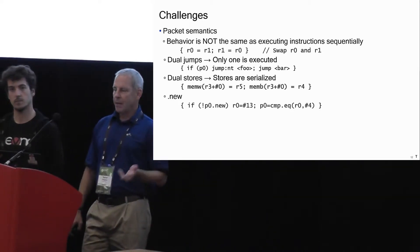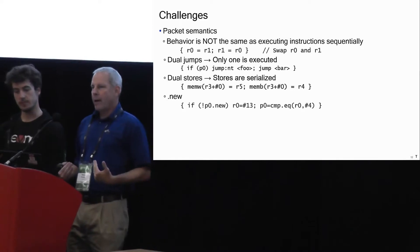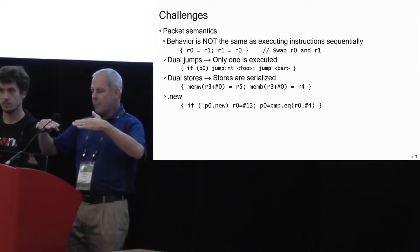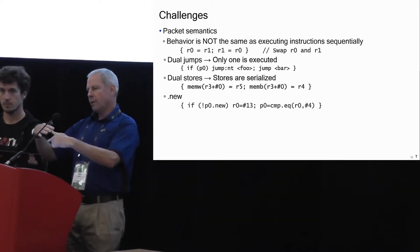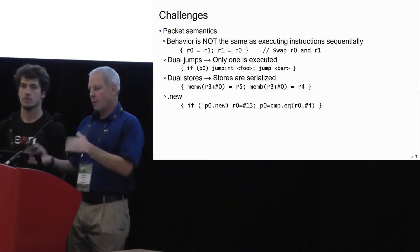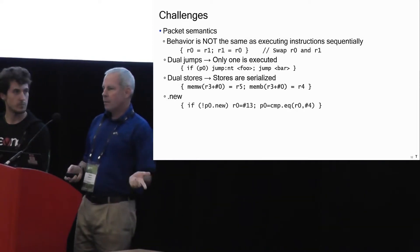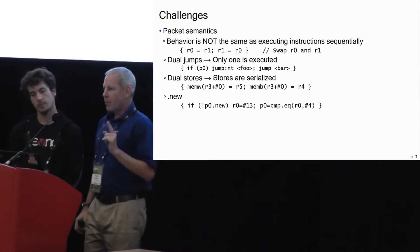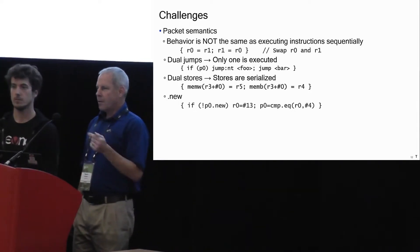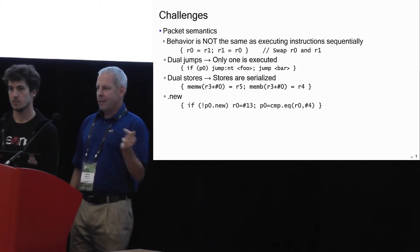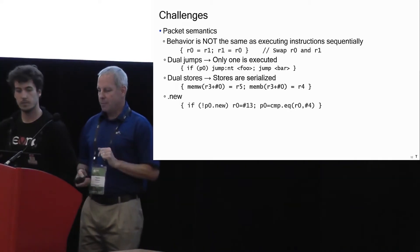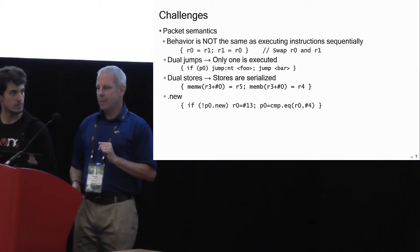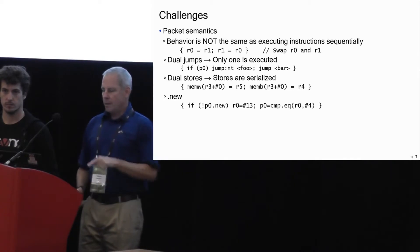There's something called .new, which takes advantage of a forwarding path in the microarchitecture. After reads begin, one operation can forward its result to another executing in parallel — you're using a value produced by another instruction in the same packet. Also, the order instructions appear in the serial encoding doesn't have to match the order you generate TCG code, so some rearranging may be needed. In this case the instruction on the right must execute first to get the value of P0 for the conditional.